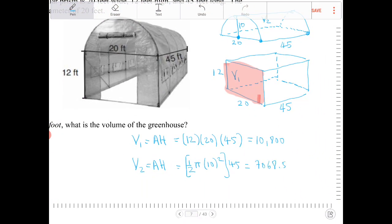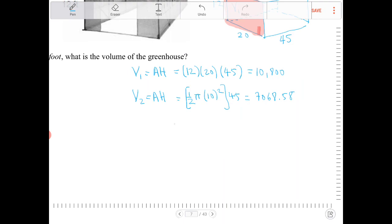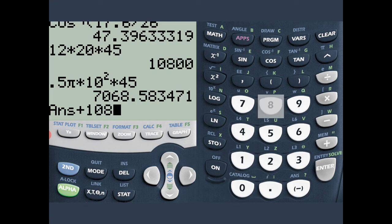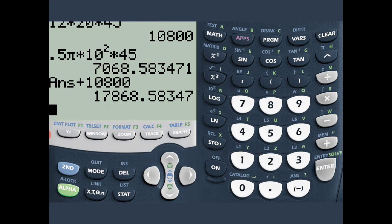That's 7068.58. We're going to add the two together, so V equals V₁ plus V₂. That answer plus 10,800 will give me 17,868.